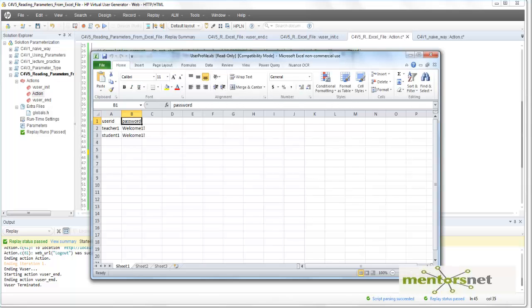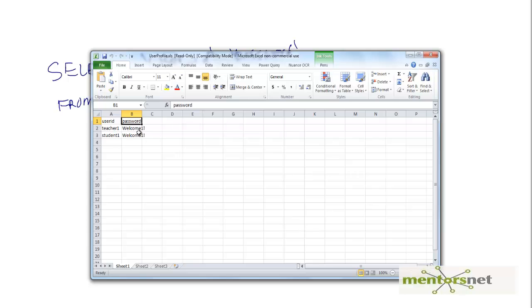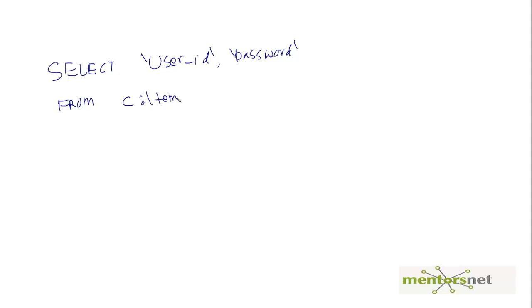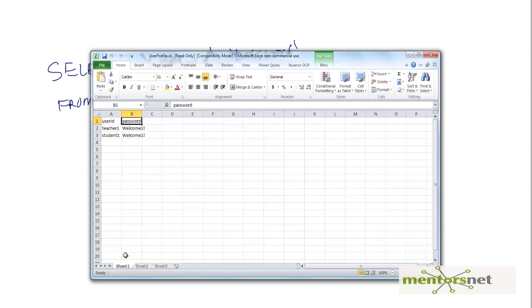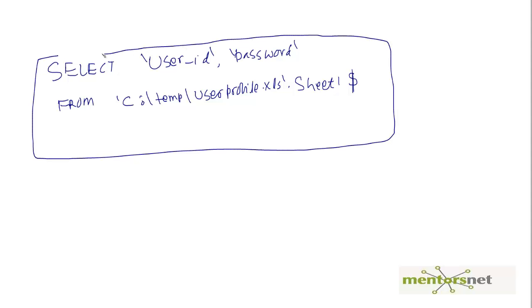To write an SQL statement to select from the Excel file — say we want to select 'user_id' and 'password' — we write: SELECT `user_id`, `password` FROM the file path, for example 'C:\temp\user_profile.xls'. Then add a backtick, a dot, the sheet name 'set one', and a dollar sign. If you provide this query, you can fetch all the data to your .dat file.